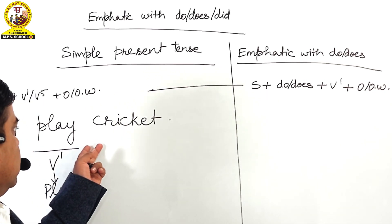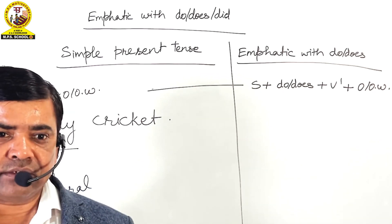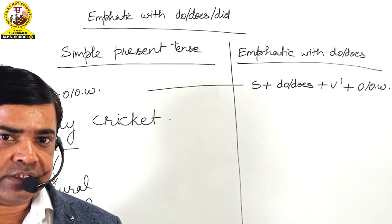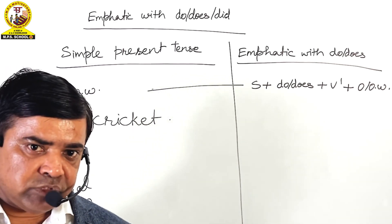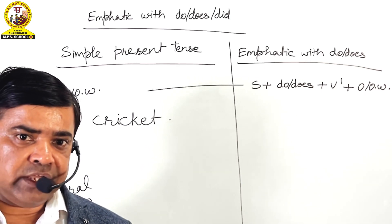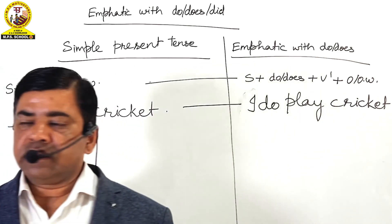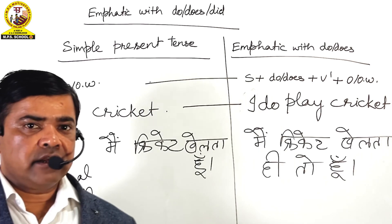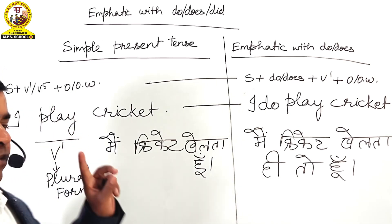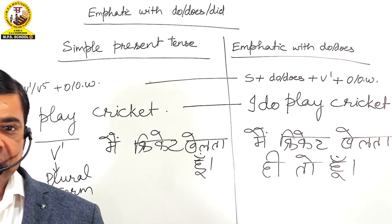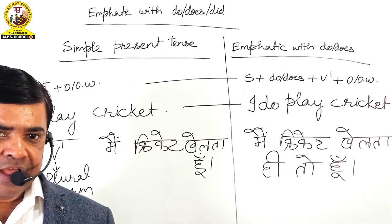Now we have to learn how to make it emphatic, and also why we make emphatic. For example, if anybody says I play cricket and others say no, you don't play cricket, then we say the same thing rigorously — we put emphasis on the statement. We say I do play cricket. I play cricket means main cricket khelta hun, and I do play cricket also means main cricket khelta hun — but said with strong emphasis.